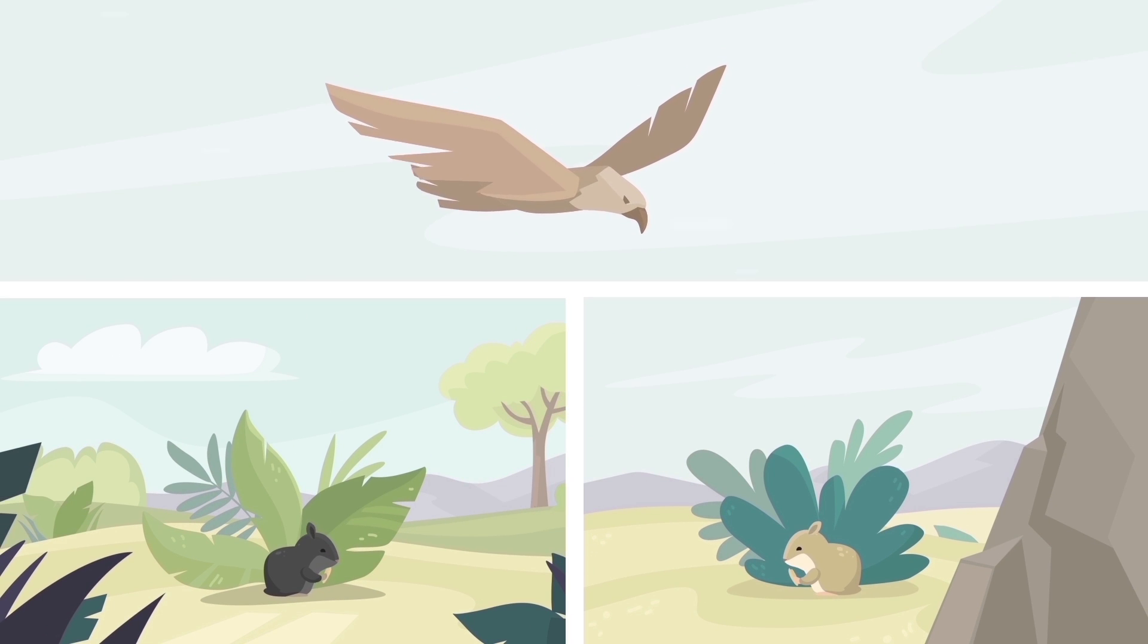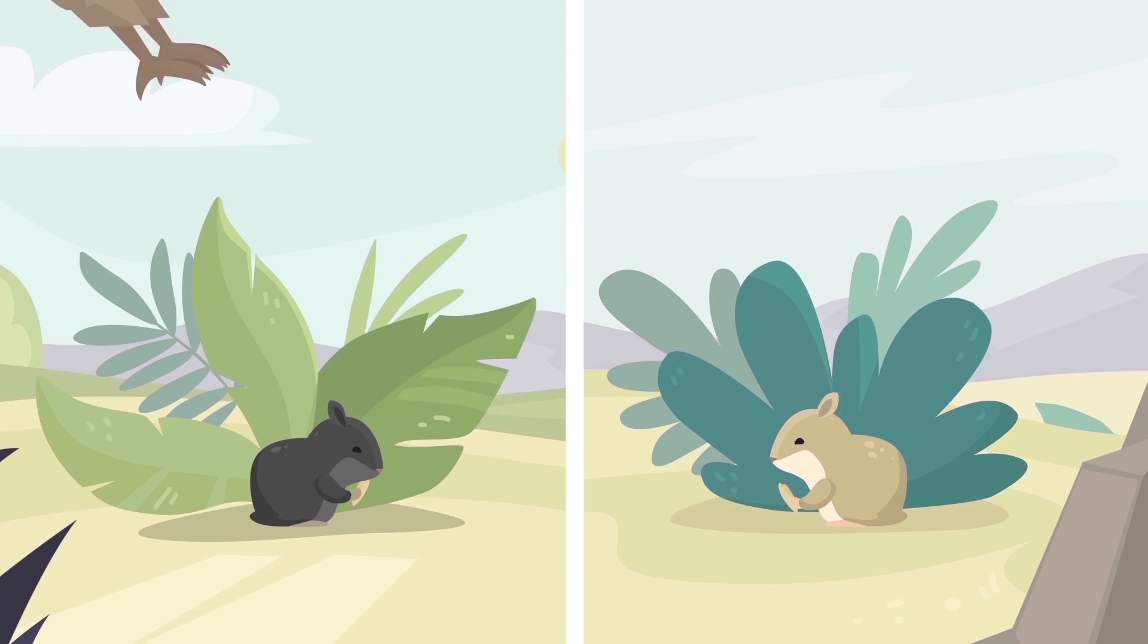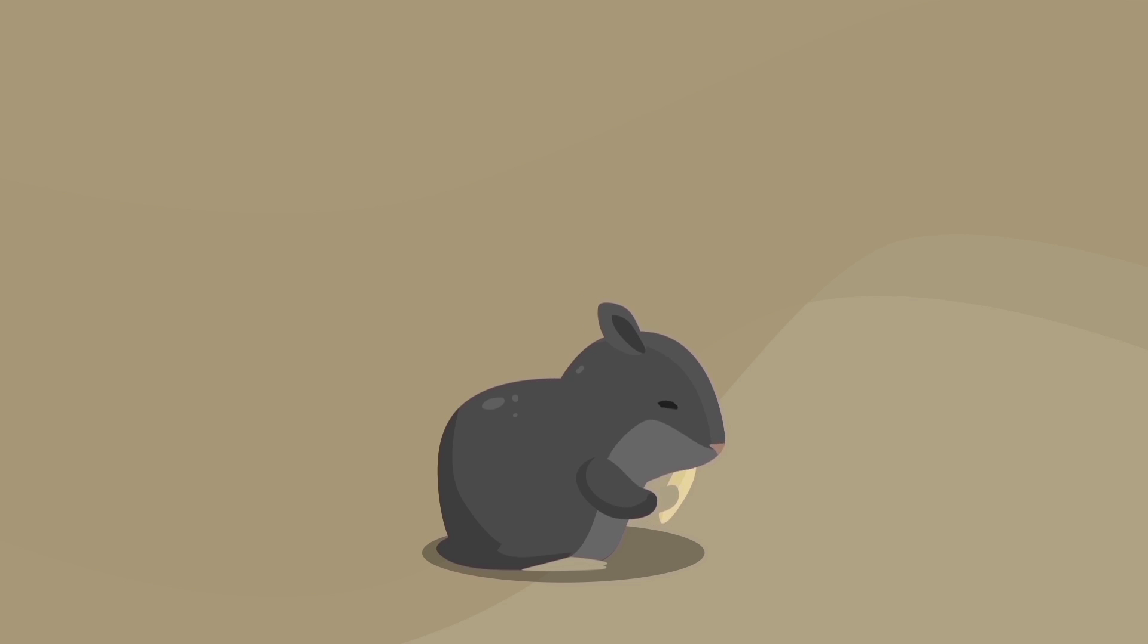This step of evolution helped the species become harder to see by birds of prey, and light-colored hamsters were more likely to survive in their surrounding habitat. But what happened that changed their normal dark color to a lighter one?